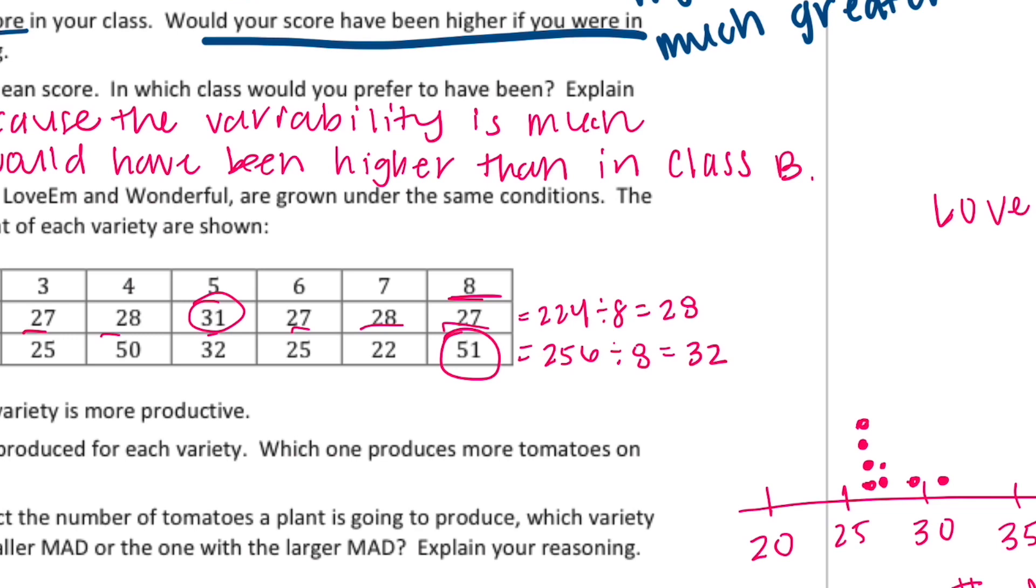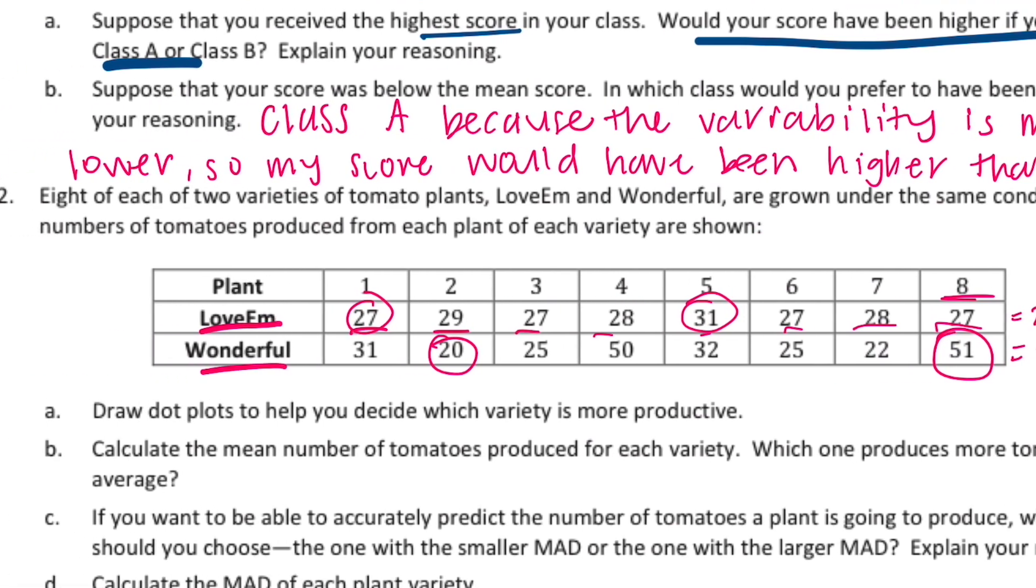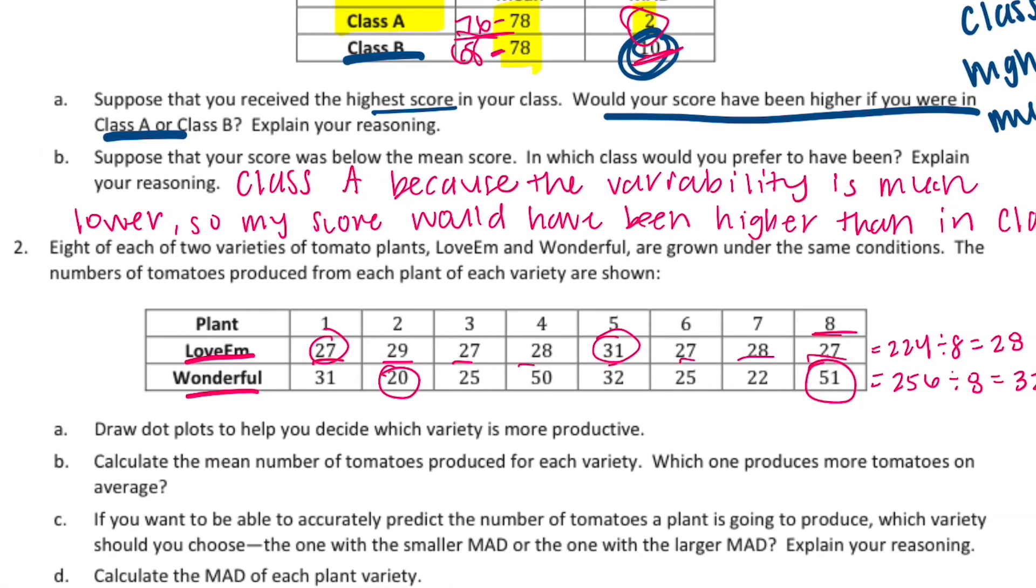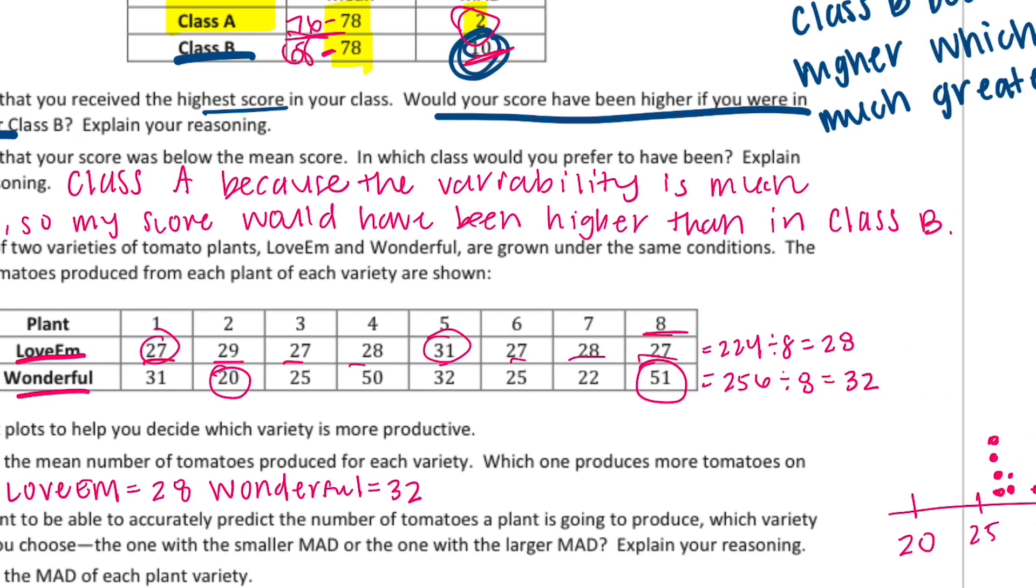Calculate the mean, which one produces more tomatoes on average? So let's say LoveEm was 28, Wonderful 32. So Wonderful produces more on average.